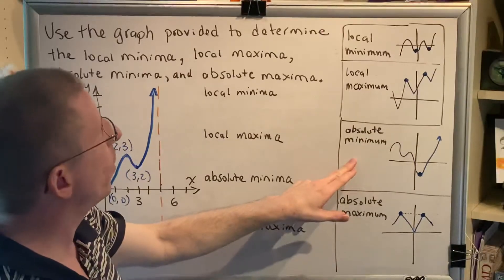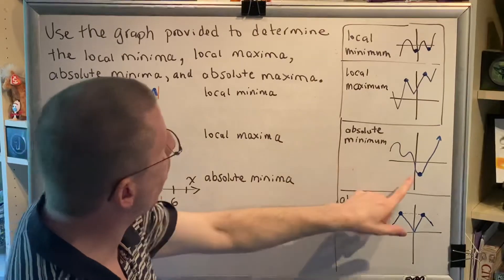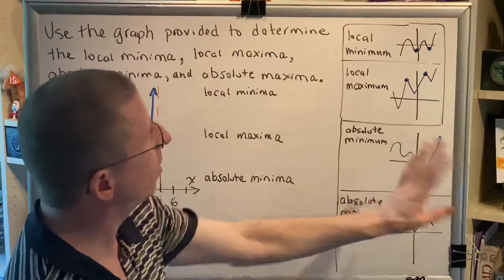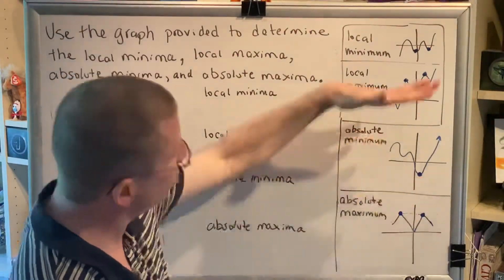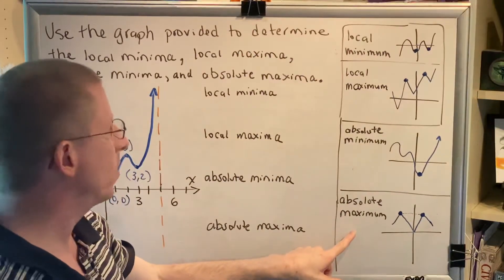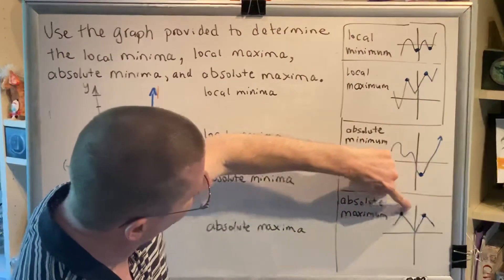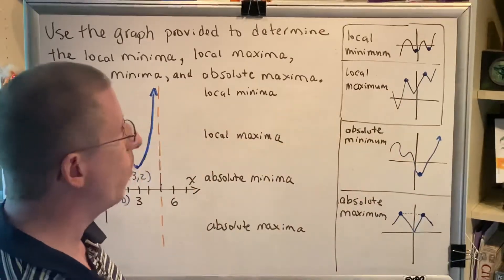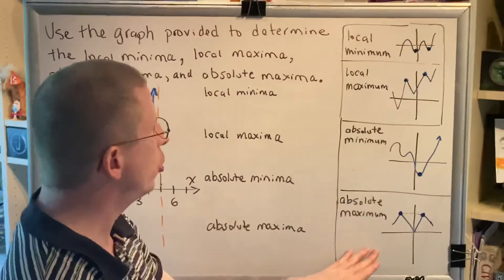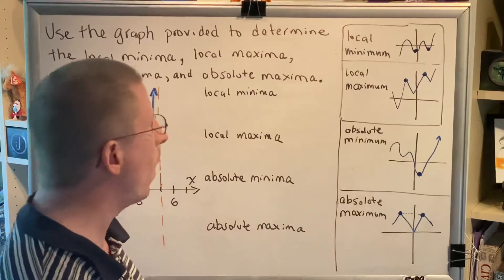The absolute minimum is the lowest of all points of the entire graph. This graph has only one absolute minimum — it's this point right here. We don't care whether there are points to the left or right of it; we just care that it's the lowest of all the points in the graph. The absolute maximum is the highest of all points on the graph. In this case we have a tie — this point and this point are the highest, so this graph has two absolute maxima.